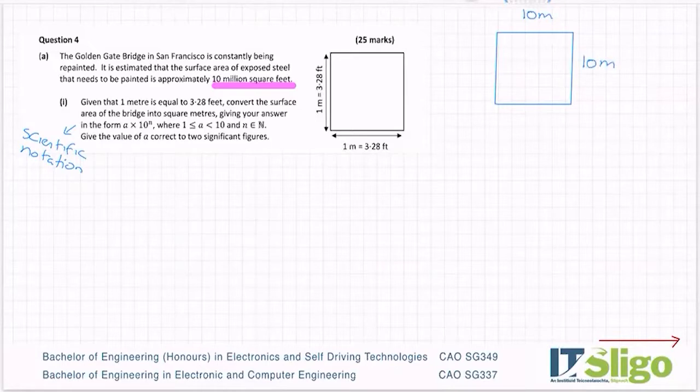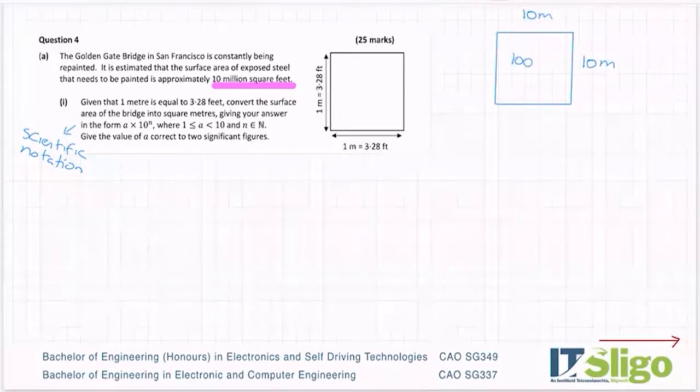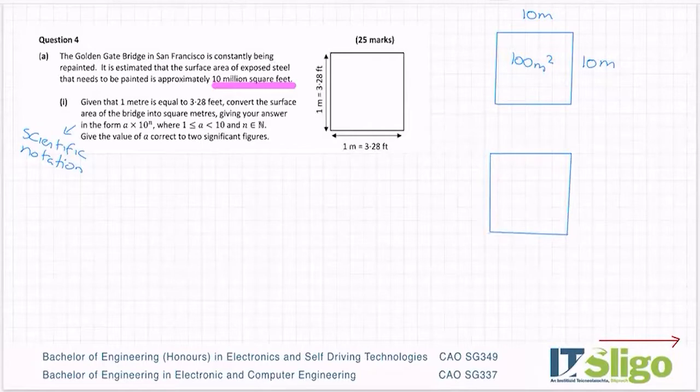And I want to make it 10 metres by 10 metres. So you know now the area of that is 10 times 10, which is 100 metres squared. Let me convert 10 metres to feet. So each metre is 3.28 feet, so 10 metres.